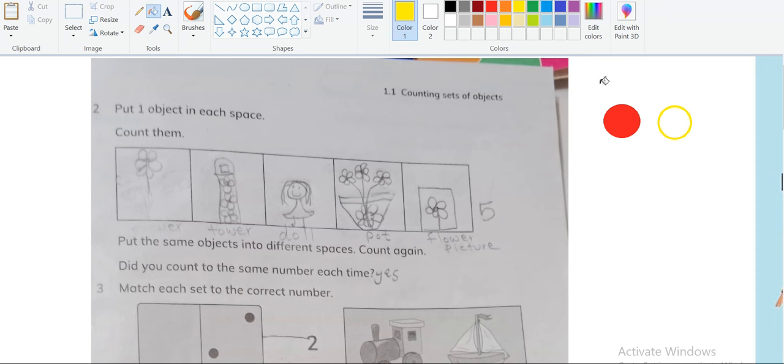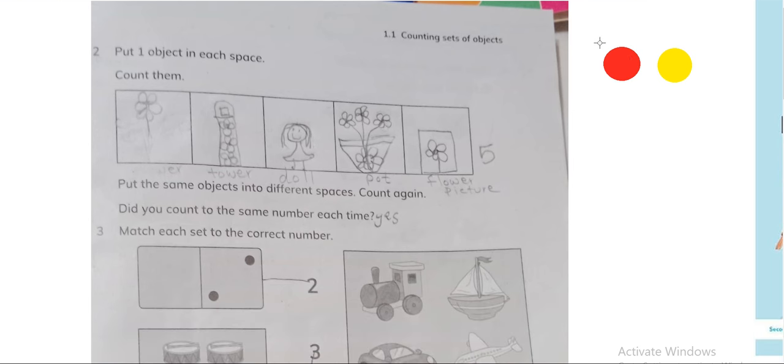For helping your child to count in different ways. Okay, so put each object in each space - one object in each space - means you need to put these five counters in each space. Let me show you how.